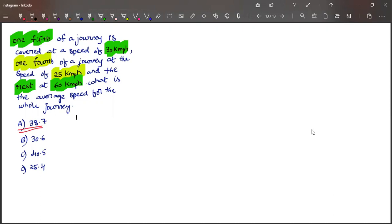So one fifth at 30, one fourth at 25, and the rest we don't know how much it is. Let us find that. It is 1 minus 1/5 plus 1/4, which equals 1 minus 9/20, which is 11/20. The rest is 11/20 at 60 kilometers per hour.